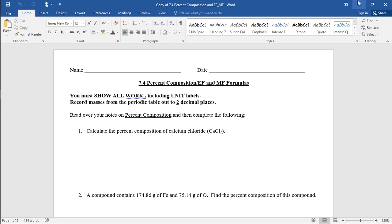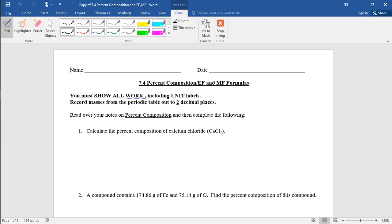I'm going to go through the first three questions. You can watch this to see if your answers are correct. The first question asks you to calculate the percent composition of calcium chloride. You'll notice this is one of those questions where you don't have any numbers, which means you find your numbers on the periodic table.